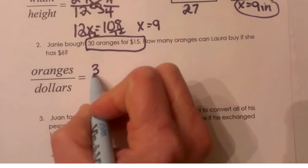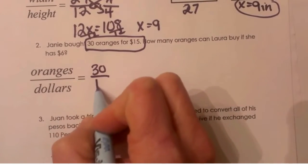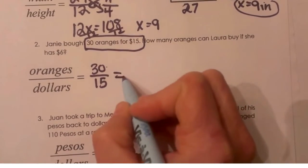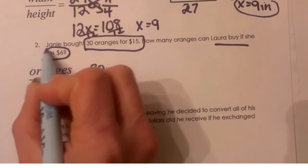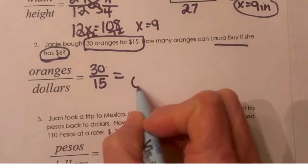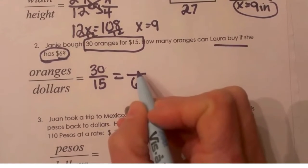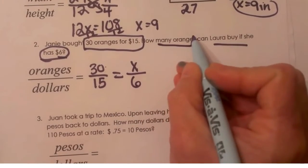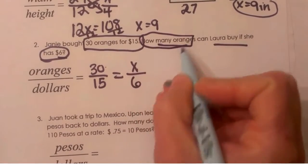So let's set up 30 over 15 for oranges over dollars is equal to, Laura only has $6. Well where did the dollars go? The dollars go in the denominator. So I'll put the 6 down here and my unknown is my X because I don't know how many oranges, but the question is asking how many oranges can I buy.